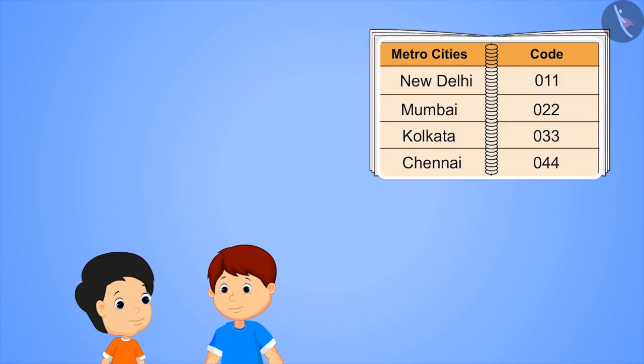What's that? The code of the four metro cities of our country is 011, 022, 033, and 044. Hey, this pattern is so easy to remember.